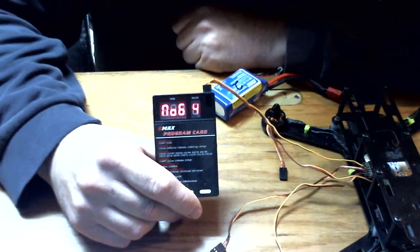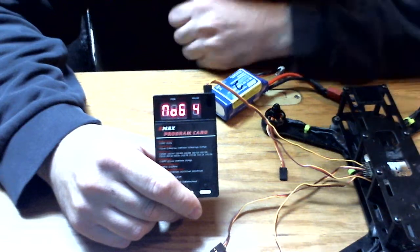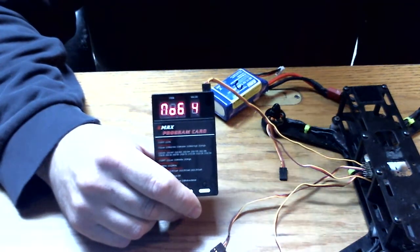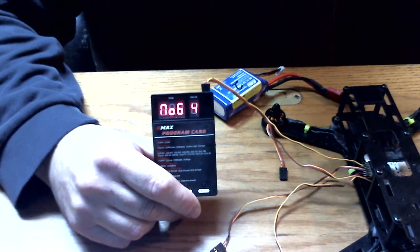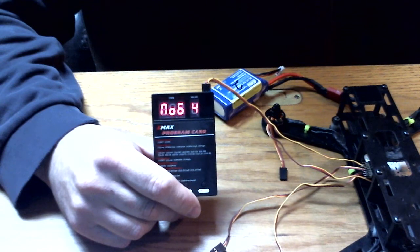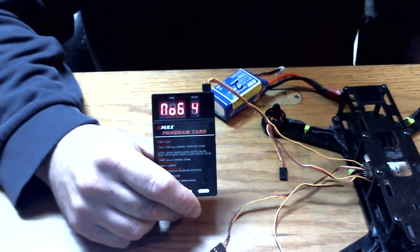Number six, low voltage protection. There are four different options. I have mine on number four for low, which is three volts. Once it gets below three volts, it shuts down.